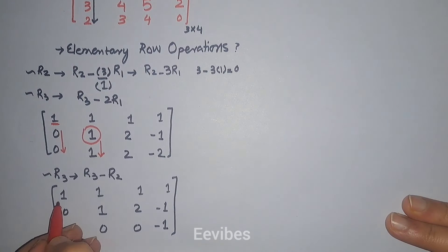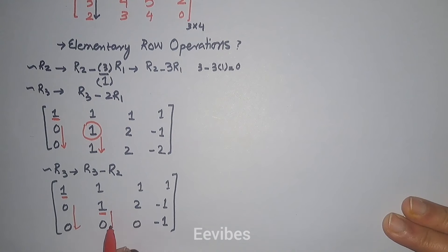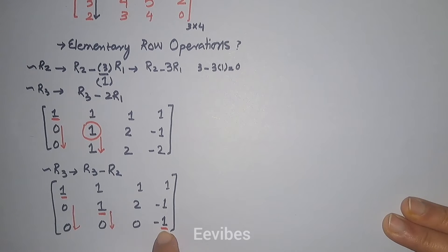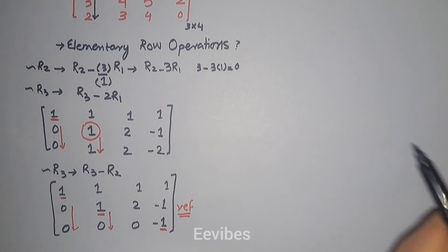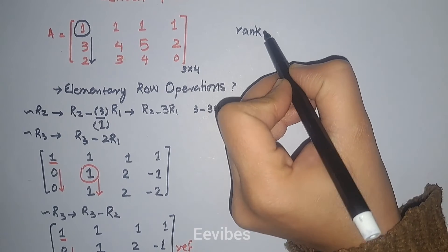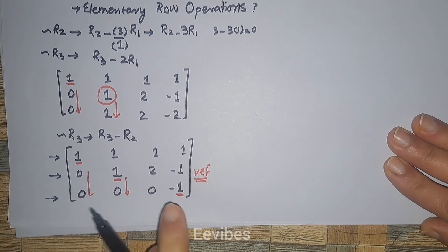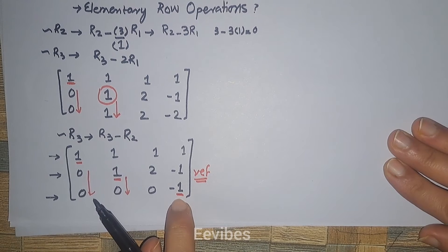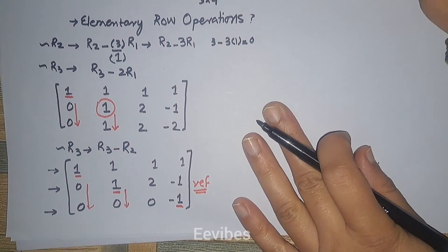We can see now the matrix has been converted into echelon form since all entries below the first pivot are zero, all entries below the second pivot are zero, and this is our pivot in the third row — a non-zero entry equal to minus one. This is the REF form of the matrix. The benefit of the REF form is that we can find the rank, which is defined as the number of non-zero rows. In this case, there are three non-zero rows.